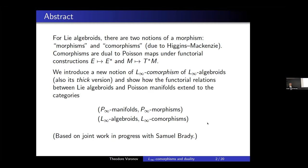Thank you very much to the organizers. What I'm going to speak about is the following: for Lie algebroids, there are two notions of morphism — one is known as a Lie algebroid morphism and the other as a Lie algebroid comorphism — and both are introduced by Higgins, Mackenzie. The natural question is which one is better and which one is more natural.